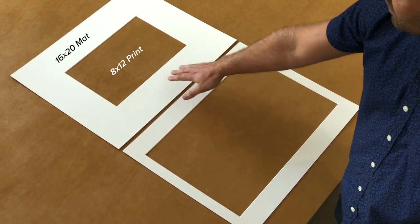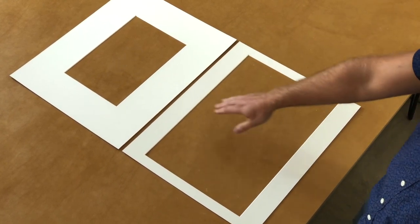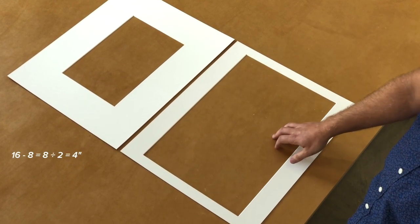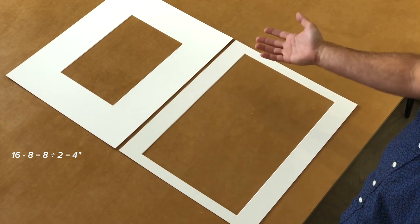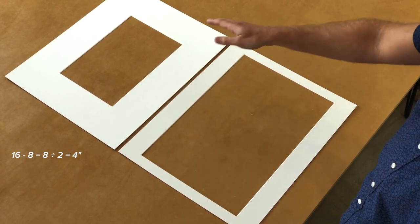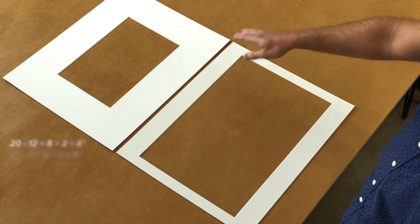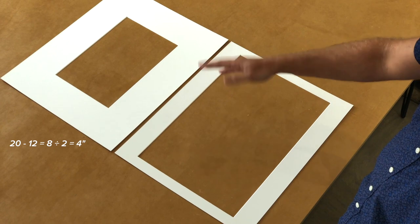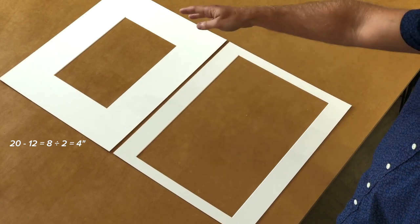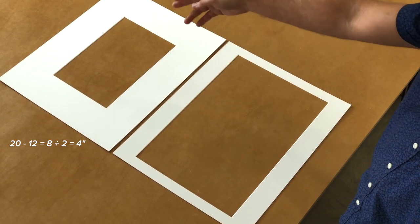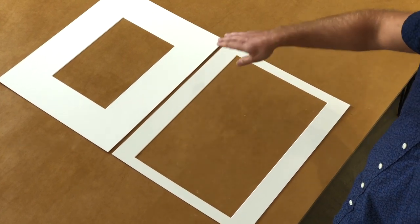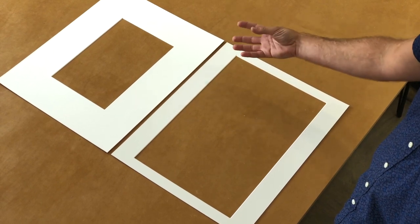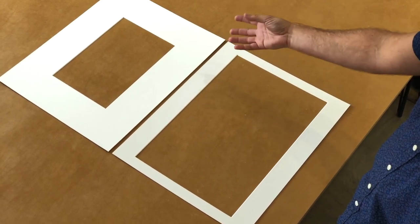And this up at the top is an 8 by 12 print and a 16 by 20 mat. So the mat on this one, the even one, is you have 16 on the short side minus 8 on the short side of the print. So 16 minus 8 is 8 divided by 2, so you have 4 inches on each side. It's the same for the long side. So this is an even 4 inch mat. It's thicker, more substantial, a little more of a negative space look. You see that a lot in museums and art galleries.